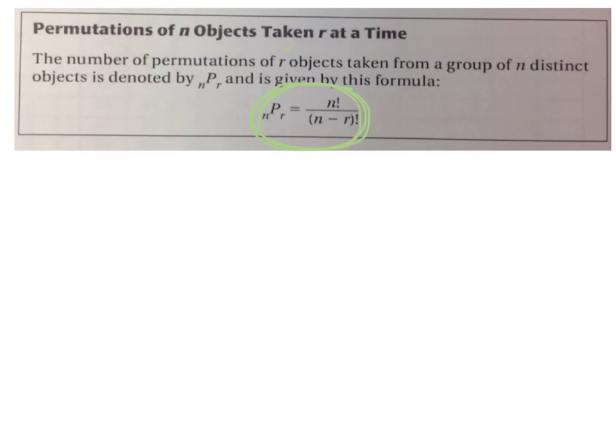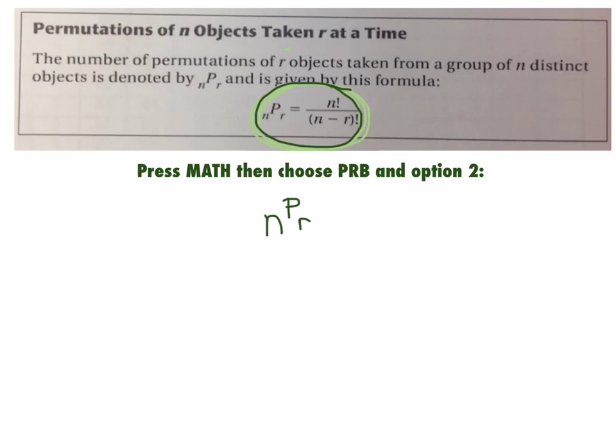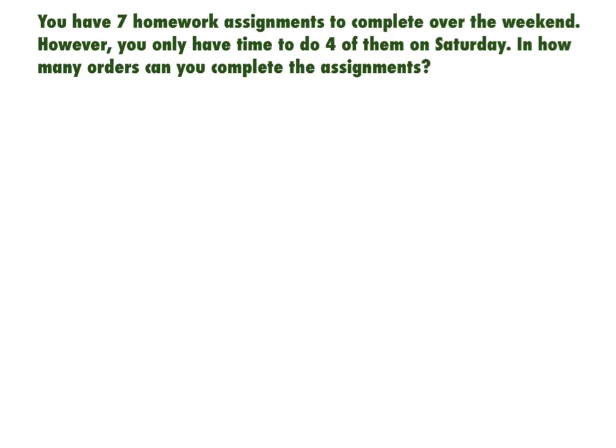And yes, you can do this in your calculator. You hit math, then you choose PRB, and then you go to option 2, which is the little NPR. So your calculator will do it for you. But you do need to have this memorized. I am going to look for your work on the paper. So use that calculator to check your work, by all means. But you must show your work. You must memorize this formula.